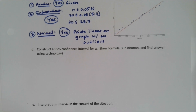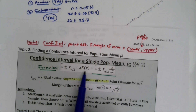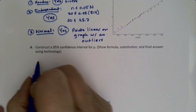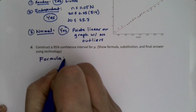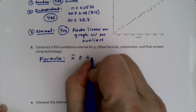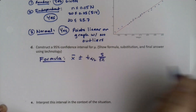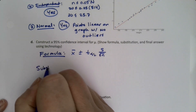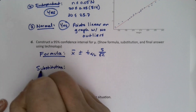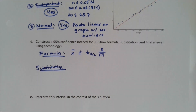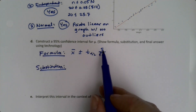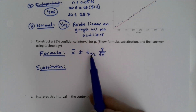Now let's construct the confidence interval. The formula for a mean is x-bar plus or minus t-alpha-over-2 times s over the square root of n. For substitution, we know n is 20, but we don't know x-bar, s, or t yet — so we have our work cut out for us.